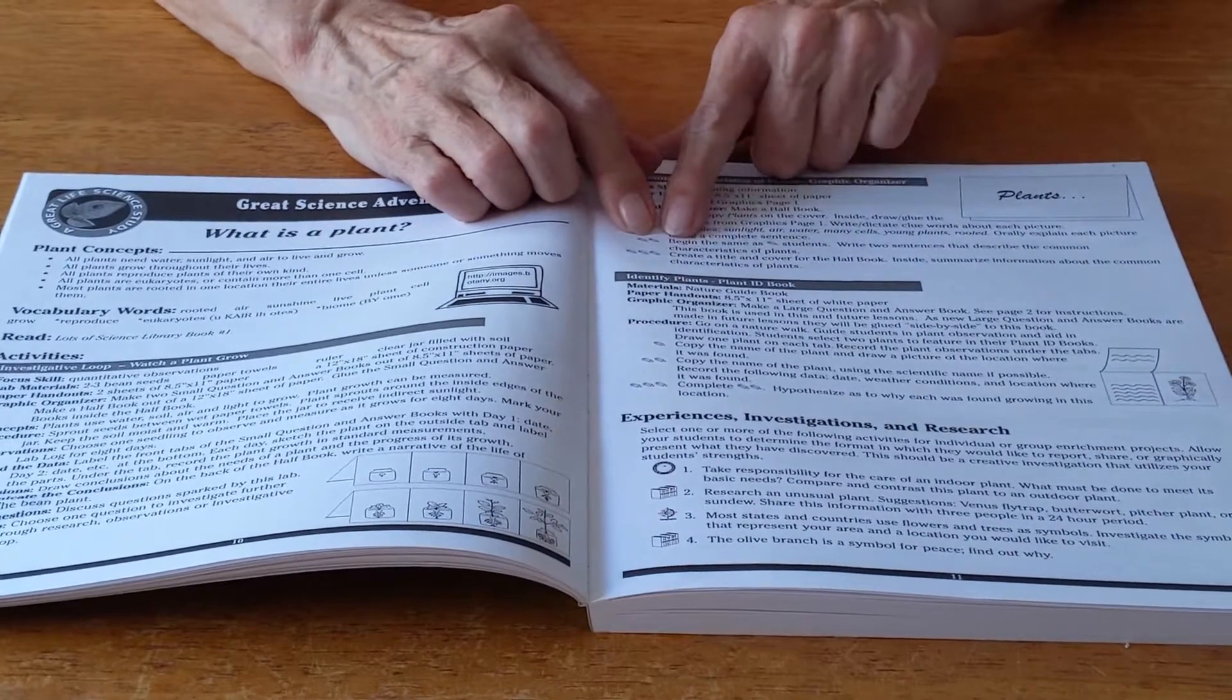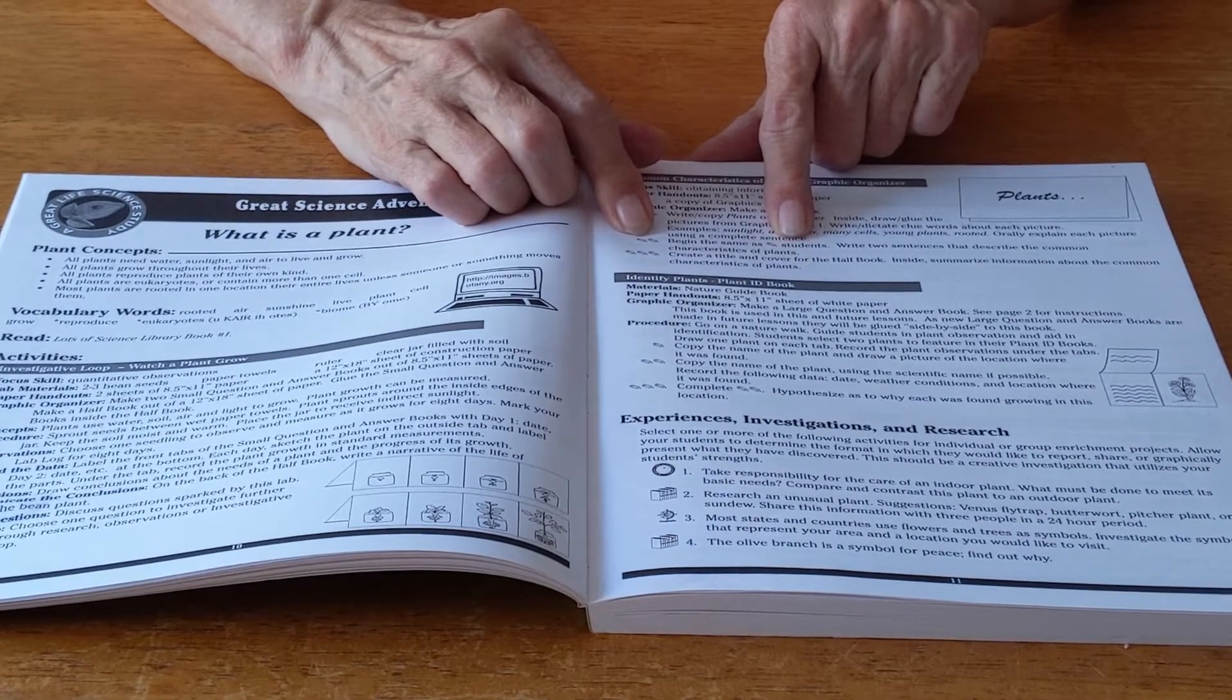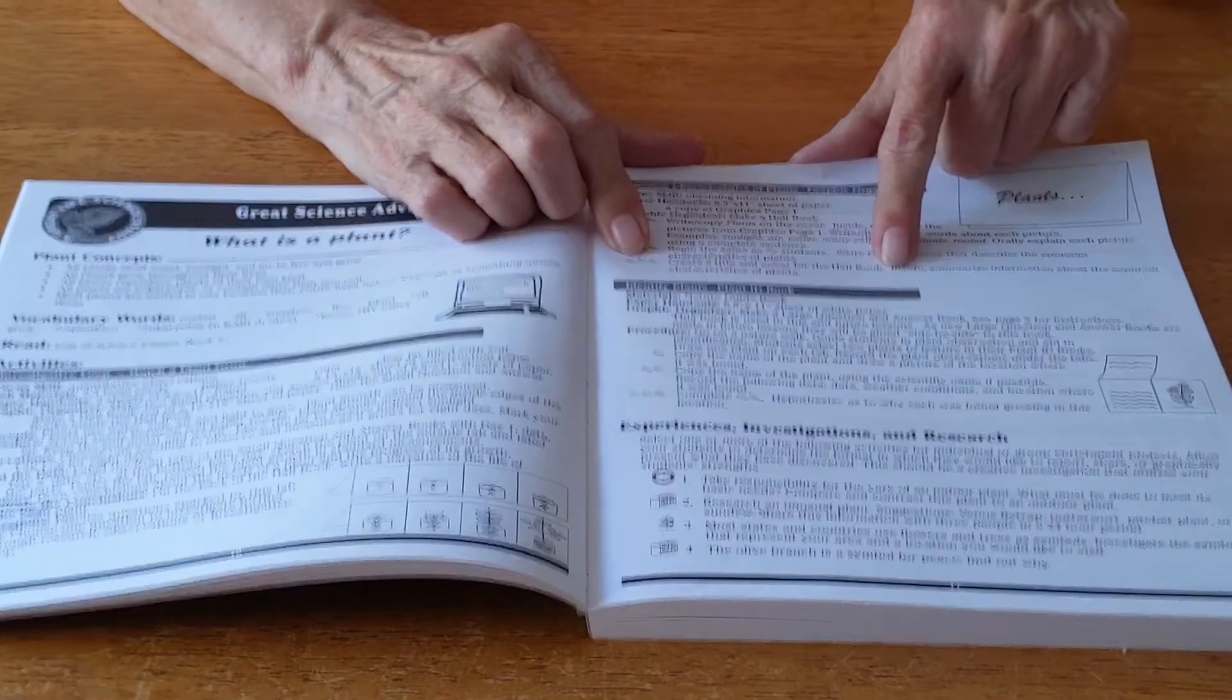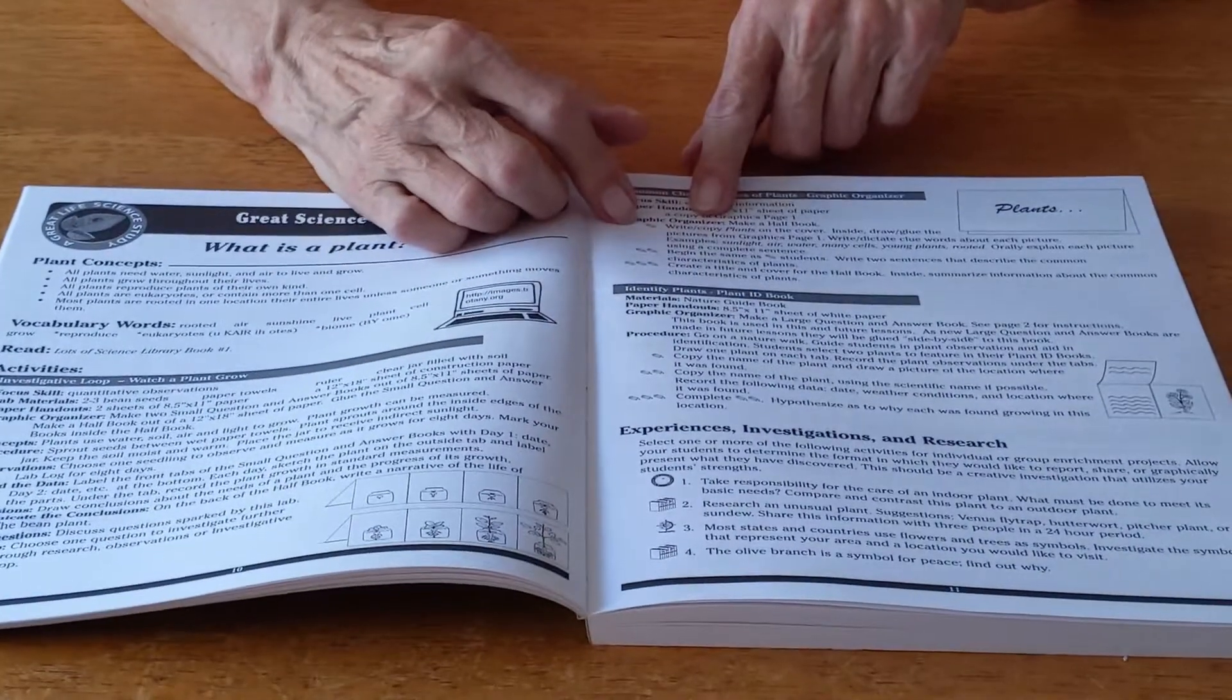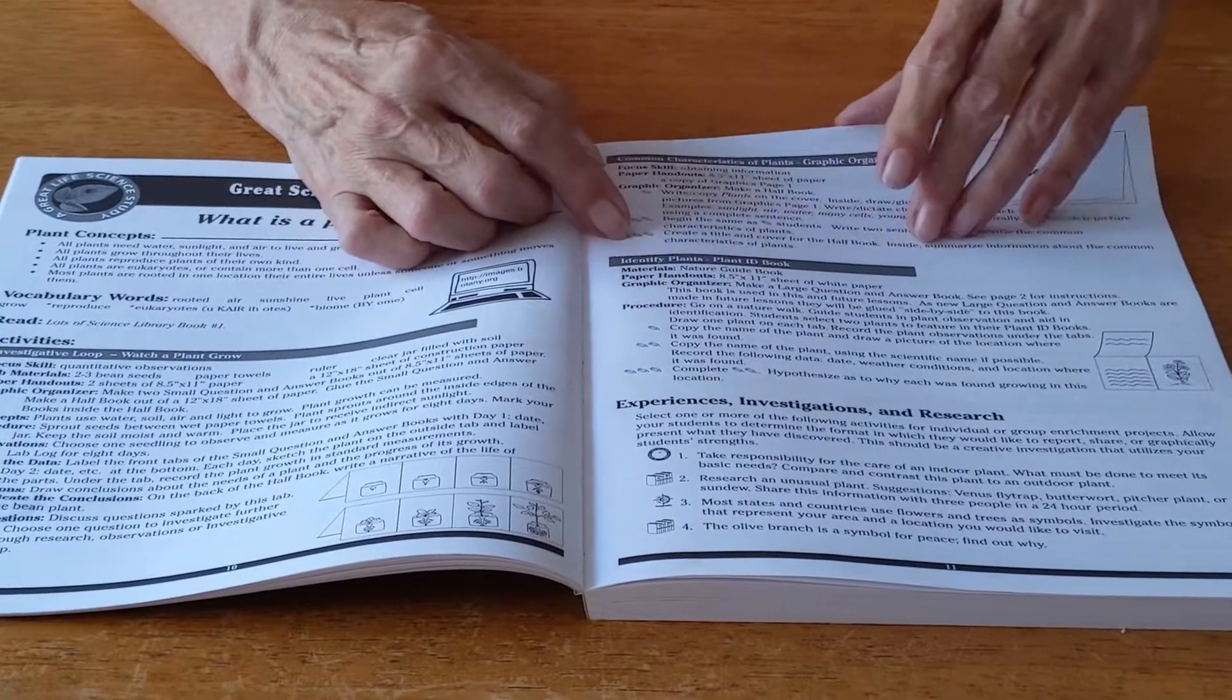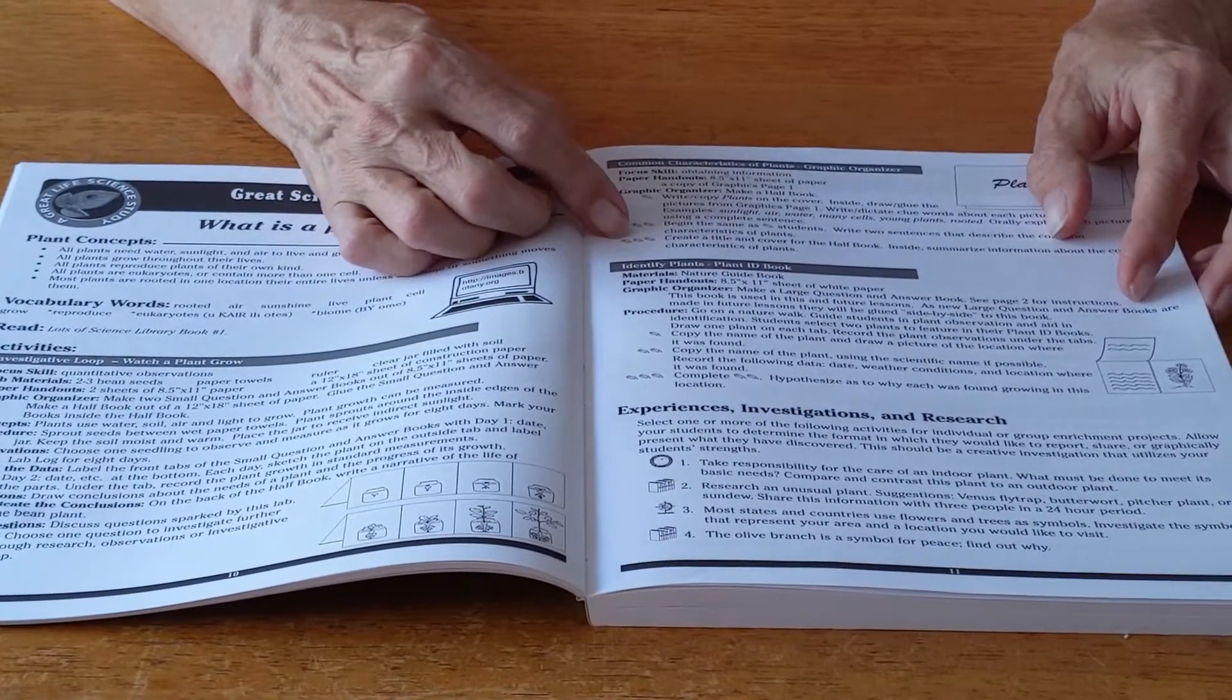Under two pencils we have directions for a student who is writing more, who is reading better, who can find information and copy it. And three pencils is for a student who is able to compose and write paragraphs and things like that. Basically the one pencil is for your younger grades one and two. Two pencil would be for three, four and three pencil would be four, five and six. If you're having older students, seventh or eighth graders, they would do the three pencil as well.